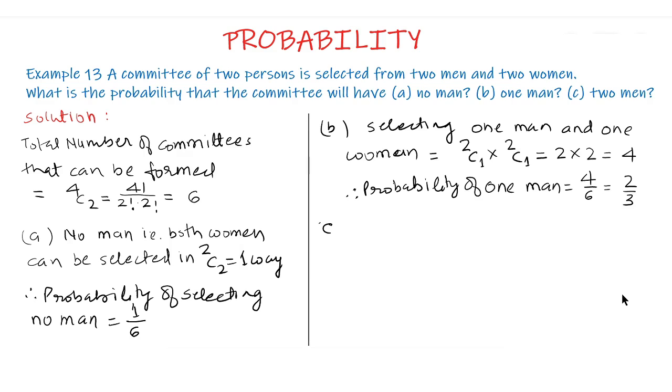Part C, two men. It means that we have not to select any woman so selecting two men equal to 2C2 which is equal to 1 therefore probability of selecting two men equal to 1 upon 6.